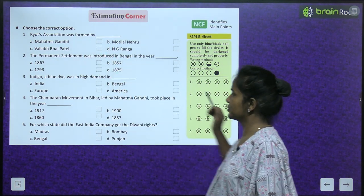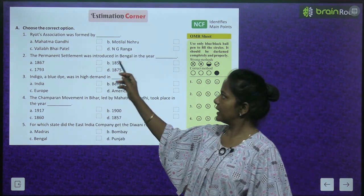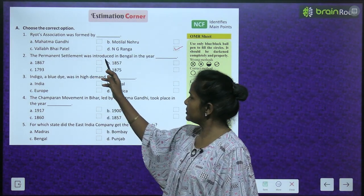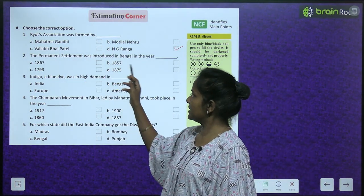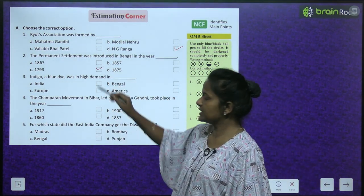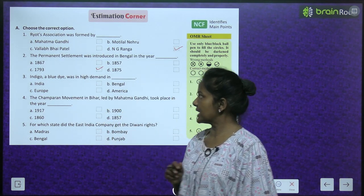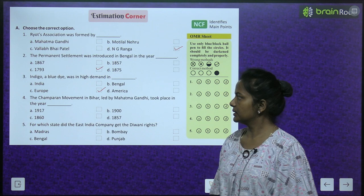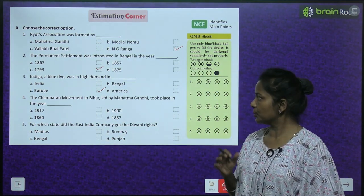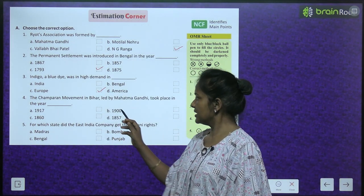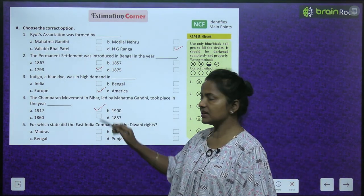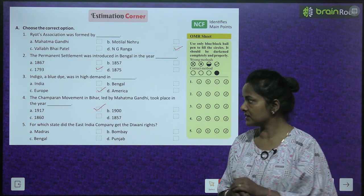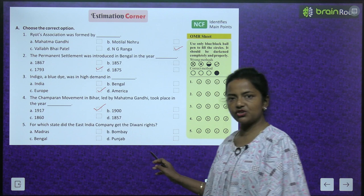Estimation corner — choose the correct option. Royats' Association was formed by N.G. Ranga. The Permanent Settlement was introduced in Bengal in the year 1793. Indigo, a blue dye, was in high demand in Europe. The Champaran movement in Bihar, led by Mahatma Gandhi, took place in the year 1917. The East India Company got the Diwani rights for Bengal.